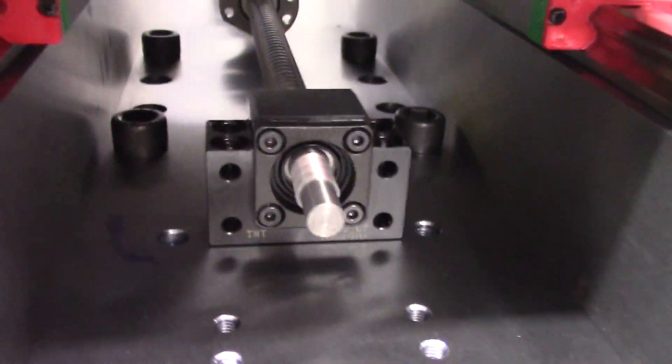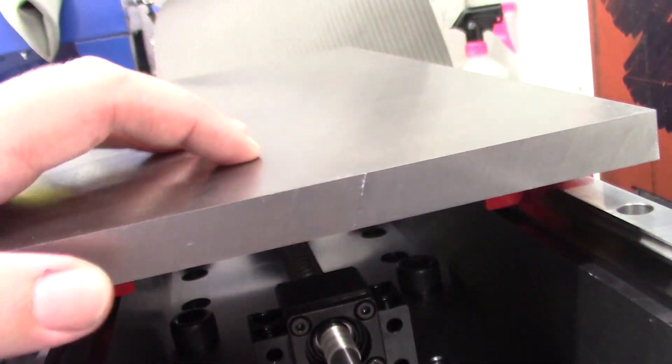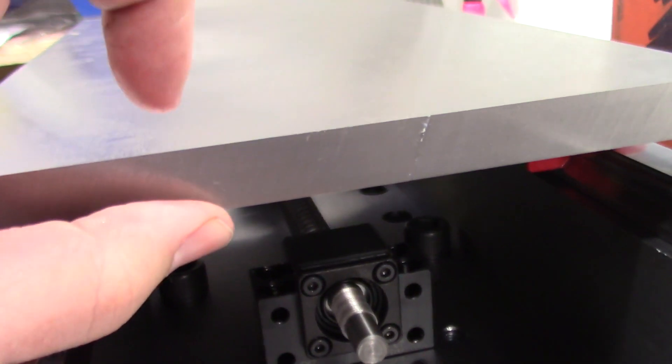And under here we have the ball screw for the table. This is just a mock-up table. The real table is going to be a bit thicker and a bit wider.